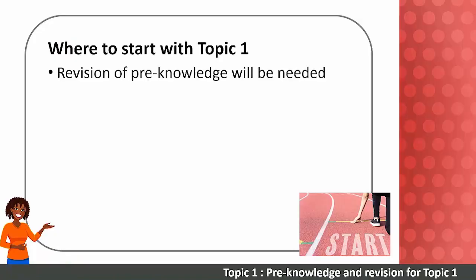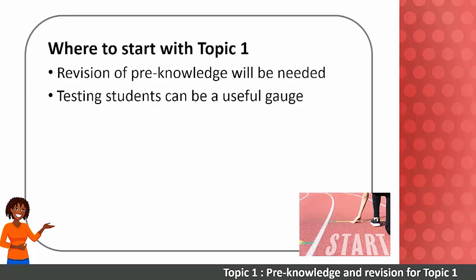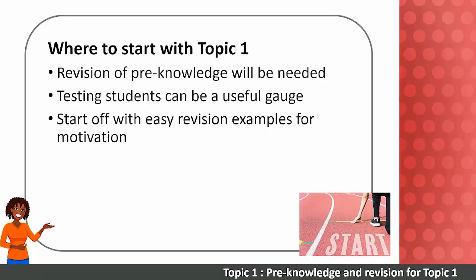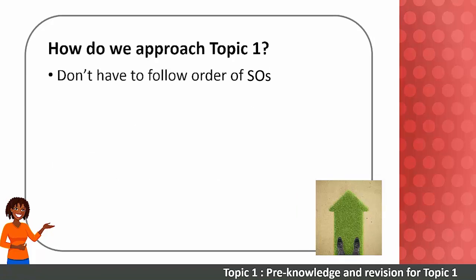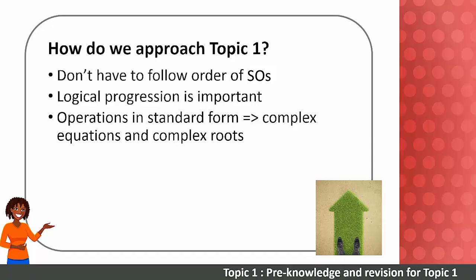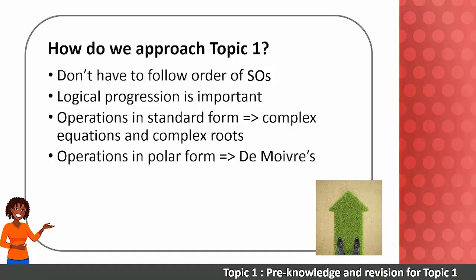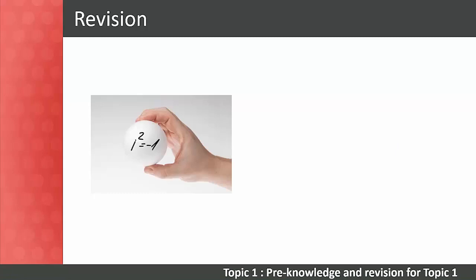Teaching tip: you will almost always need to start off with some revision of pre-knowledge. Looking at Level 3 pass marks and testing students can be good ways to assess your students' baseline knowledge before you start a new topic. Start with some basic revision examples to motivate your students, and build on the revision with new content. Remember to always move from what is known to what is unknown. Lecturers don't always have to follow the exact order of the subject outcomes — there's no right or wrong approach, so long as you provide a logical progression of knowledge.